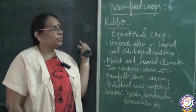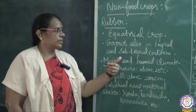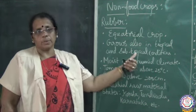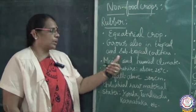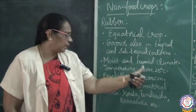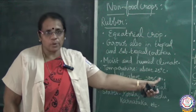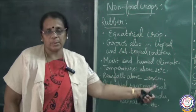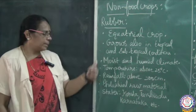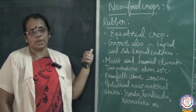Now we discuss non-food crops, starting with rubber. Rubber is an equatorial crop that grows in tropical and subtropical conditions. It needs a moist and humid climate, a temperature above 25 degrees Celsius, and rainfall above 200 centimeters. Rubber is used as an industrial raw material — for making rubber tubes, pipes, etc.